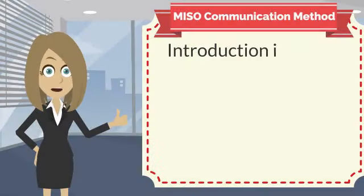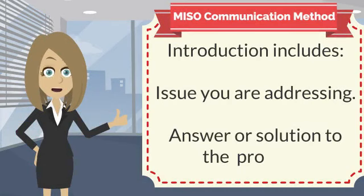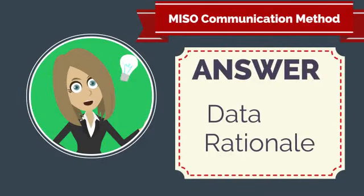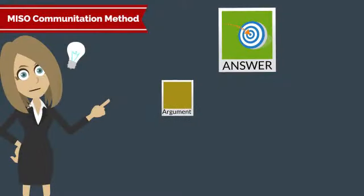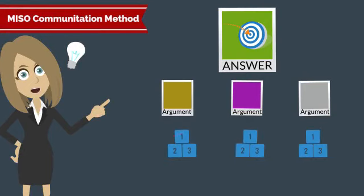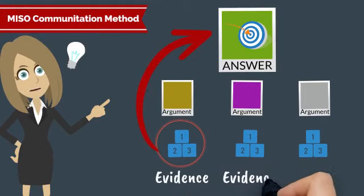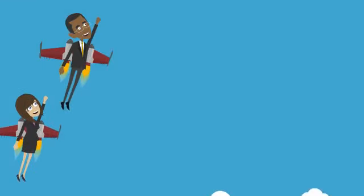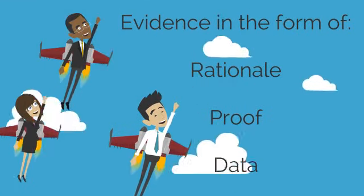One of the key principles of this model is that your presentation starts with an introduction that states both the issue you're addressing and your solution or answer to the issue or problem. The rest of the presentation supports your solution or answer. Your data or rationale come after the answer. Your key message or answer is supported by a combination of supporting arguments that, together, create the logical storyline naturally leading to the conclusion that your key message is correct. Each supporting argument is made irrefutable with the help of rationale, proof, and data.